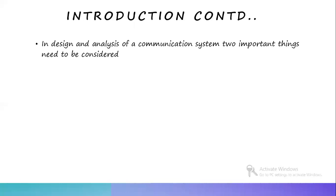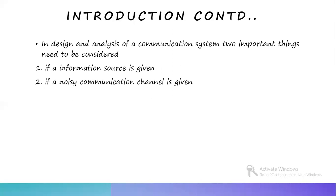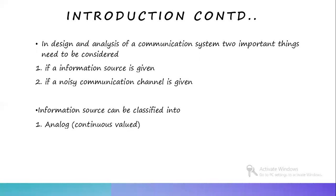In the design and analysis of a communication system, two important things need to be considered. The first is the case where an information source is given — we need to think how to evaluate the rate at which the source is emitting information. The second is where a noisy communication channel is given — we need to evaluate the maximum rate at which reliable information transmission can take place over the channel. Information sources can be classified into analog and discrete. An analog source emits a continuous electrical waveform such as voice or voltage, while a discrete source emits a sequence of symbols.